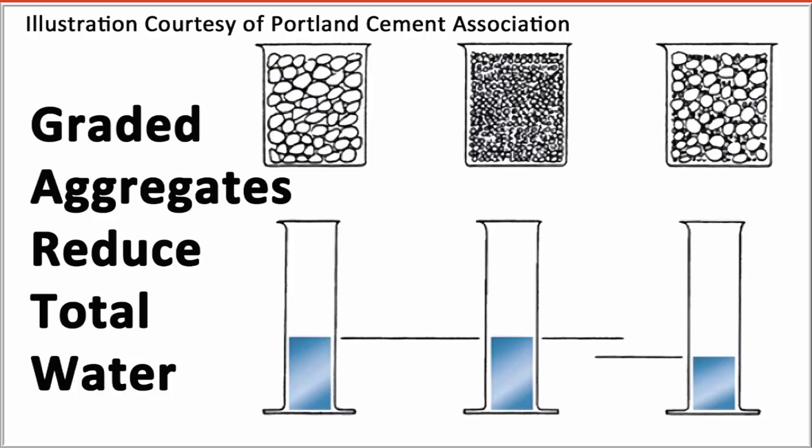This illustration shows that total water content is reduced when graded coarse aggregates are used. The void space in freshly mixed concrete is the space not filled with aggregate and is otherwise filled with cement paste. Graded aggregates reduce the voids around the aggregate, minimizing the cement paste needed to fill the void. Of course, a certain amount of excess paste is needed to get a workable mixture. Using just enough paste to fill the voids around a tightly packed aggregate would make the mixture unworkable.